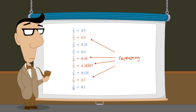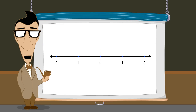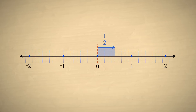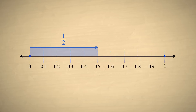You may be wondering why some fractions can be represented with a finite number of digits while others cannot. To see why, let's take a look at the fraction one-half on the number line. One-half can be represented by exactly five-tenths, so one-half is equivalent to the decimal number zero point five.